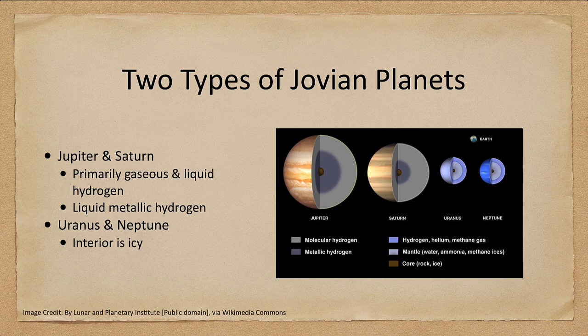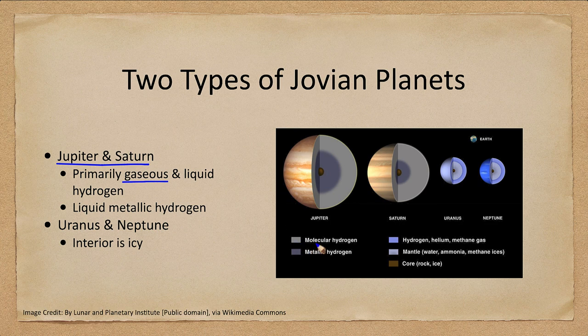When we look at the giant planets we can actually subdivide them, much as we did with the terrestrial planets. We had the cratered worlds of Mercury and we threw our Moon in there even though it's not a planet, and then we had Venus and Mars which were more Earth-like. Here we again have two types of Jovian planets: Jupiter and Saturn, which are primarily gaseous and liquid hydrogen. Their structures look roughly the same, the only difference being the size — they have molecular hydrogen and metallic hydrogen in their cores.